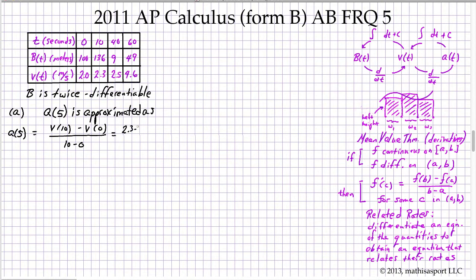So we're going to approximate a(5) by writing the velocity at 10 minus the velocity at 0, namely the change in velocity over that time period, over the change in time, which is 10 minus 0. That comes out to putting in the actual values, 0.03. Now what about the units? Well, the velocity itself is meters per second, and then we're dividing by seconds, so our units are meters per second squared.